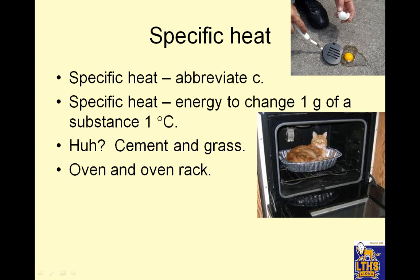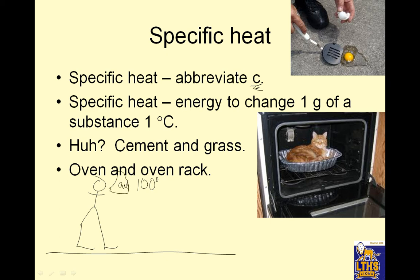Specific heat, abbreviated c. Specific heat is the energy needed to change one gram of a substance one degree Celsius. Here's an analogy: in Indiana we run around barefoot. If it is summertime and it's 100 degrees Fahrenheit, the temperature of the cement is 100 degrees — walk on it and you say ow, and quickly run to the grass. The temperature of the grass is also 100 degrees, but the grass does not conduct heat as well, so it doesn't hurt as badly. Cement has a low specific heat, meaning it transfers heat fast. Grass has a high specific heat, meaning it transfers heat slowly.